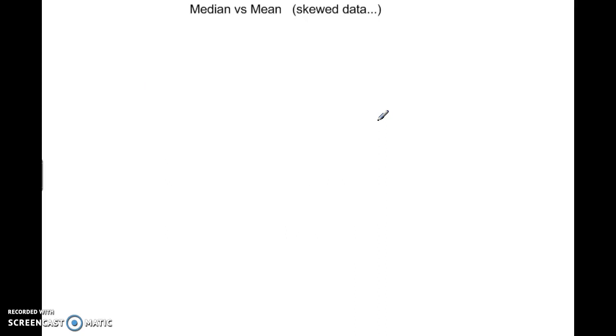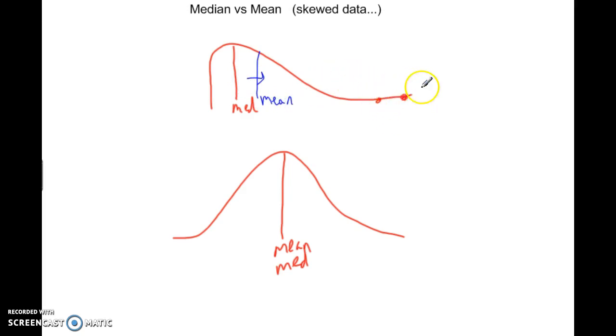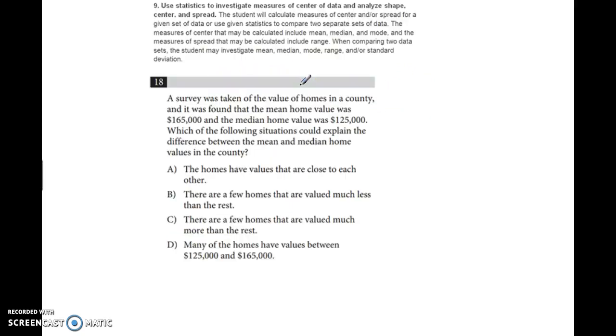Finally, skewed data versus symmetric data is tested. If data is symmetric, the mean and median are literally in the middle—they're the same value or very close. If you have big outliers, the median stays at the center, but the outliers pull the mean. The mean gets pulled toward the skew. Big values have a huge effect on the mean, pulling it away from the median in the direction of the skew. You have to know that concept.